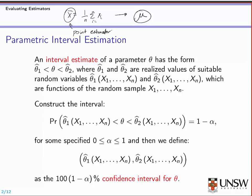Now this is different from interval estimation. The interval estimation will provide an entire interval for the parameter of interest theta, which will have the form theta1, theta2. So theta1 is a lower boundary and theta2 is the upper boundary. Thereby, theta1 and theta2 will be some realized values of random variables, theta1 and theta2, which are each a function of your sample.